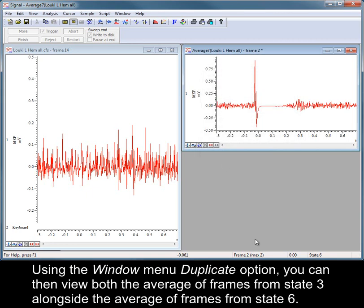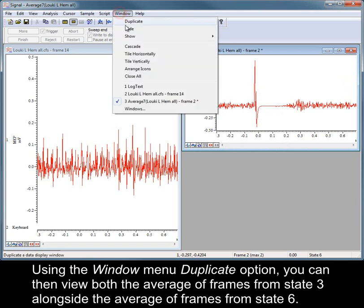Using the Window menu Duplicate option, you can then view both the average of frames from state 3 alongside the average of frames from state 6.